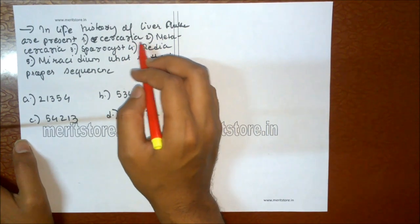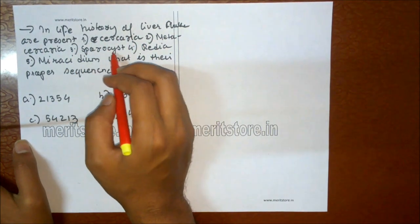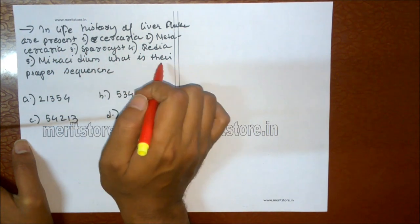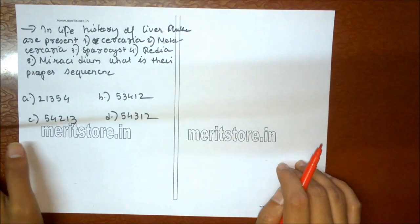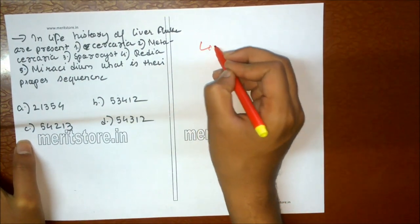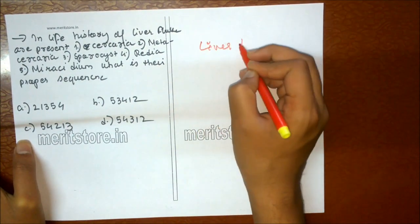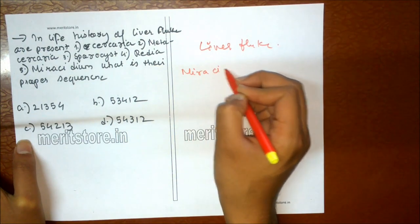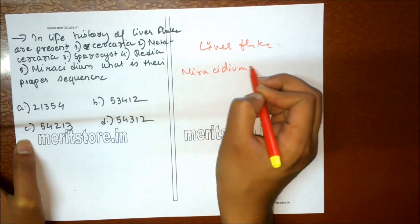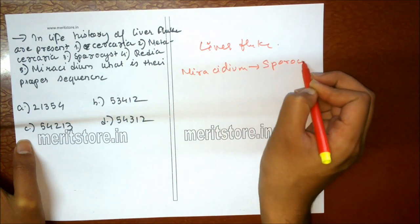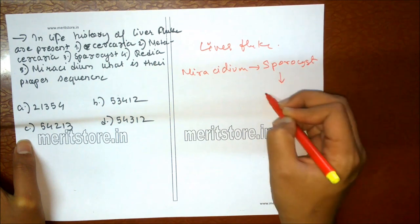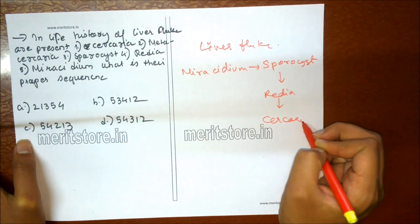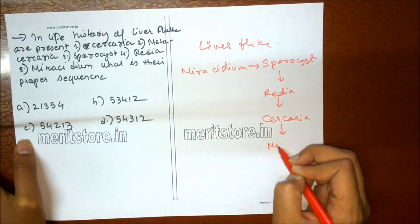The larval stages of liver fluke are: 1 cercaria, 2 metacercaria, 3 sporocyst, 4 redia, 5 miracidium — what is their proper sequence? The different larval stages of liver fluke occur in the following sequence: first miracidium, then sporocyst, then redia, then cercaria, and the most adult-like stage is metacercaria. So option B is the correct answer.